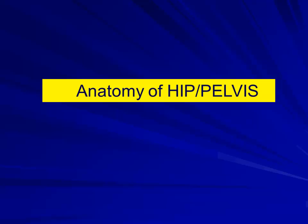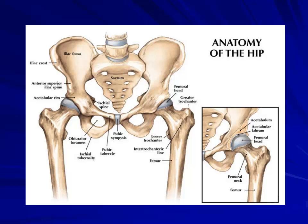Moving on to the hip and pelvis. When you talk about the hip, you need to know all this area. You've got the lumbosacral region, the SI joint, sacrum, coccyx, iliac bone — the whole thing, the pelvis — and then the femora.